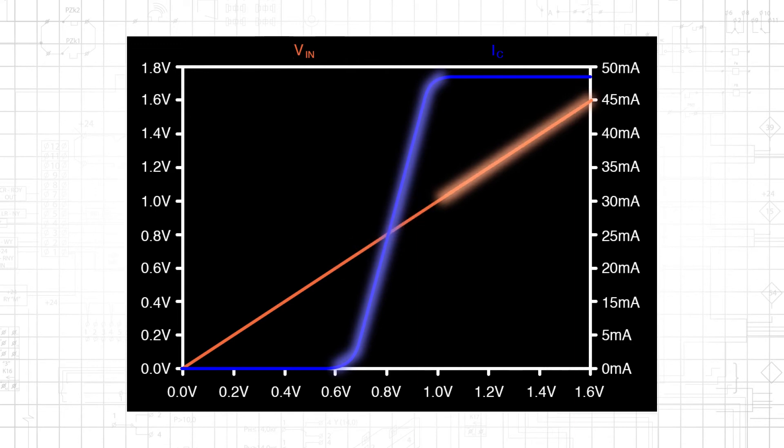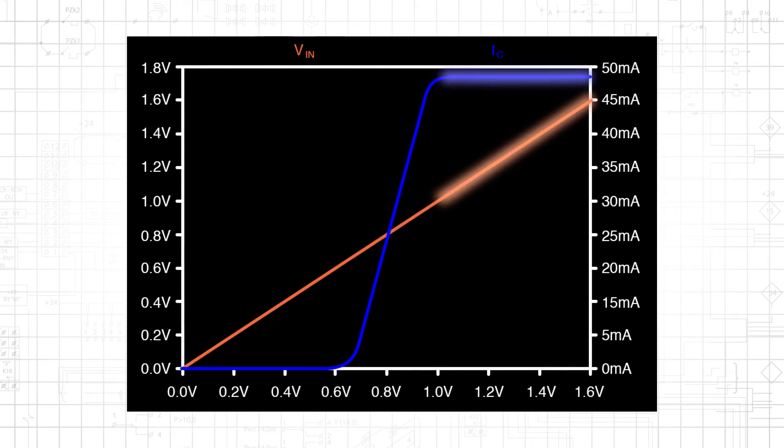When Vin reaches approximately 1.05 volts, the collector current causes enough voltage drop across RC to move the BC junction into the forward biased region. This is when the transistor enters saturation. Though Vin continues to increase, the collector current is almost constant.